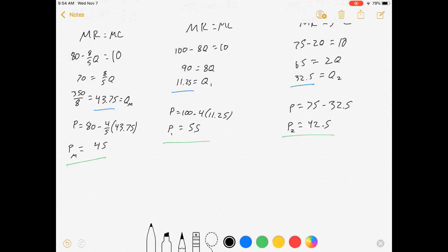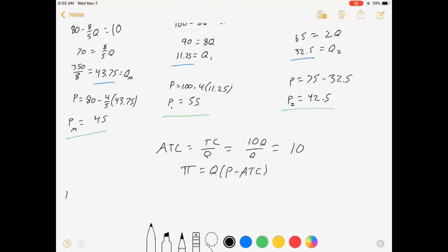Now the average total cost for this firm, ATC is equal to TC over Q. That's 10Q over Q, which is just 10. So calculating profit for all of them, profit is equal to quantity times price minus average total cost. Profit is 43.75 times 45 minus 10. Profit equals 1531.25.